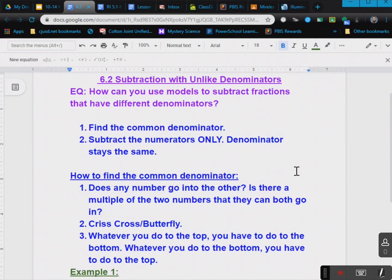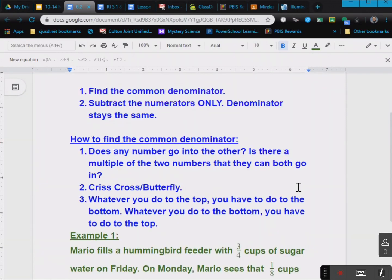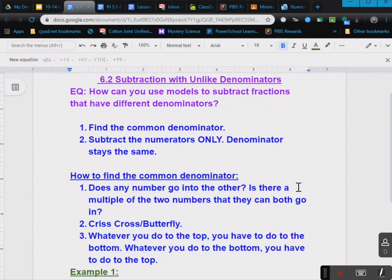So the steps are almost the exact same as the addition steps. You've got to find the common denominator, and then you subtract the numerators only. The denominator stays the same. And in case you forgot, what's the numerator, what's the denominator?